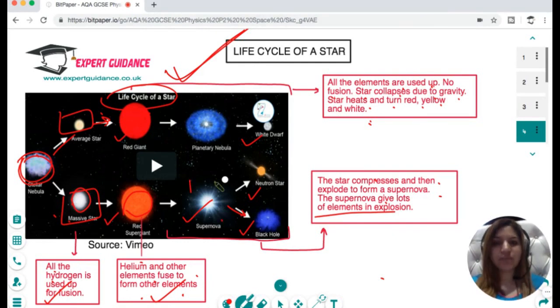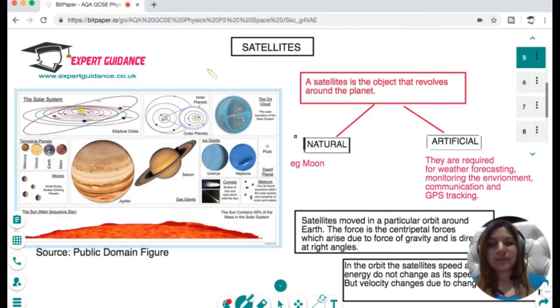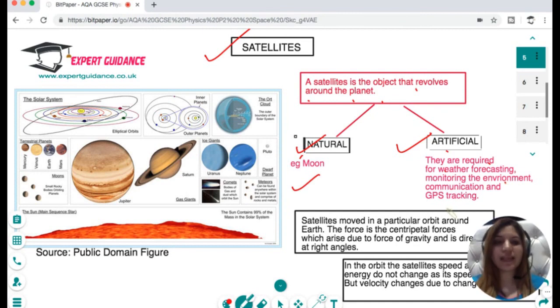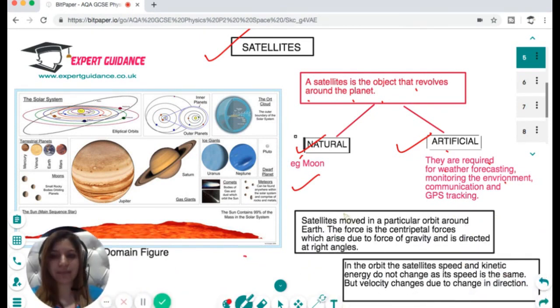Next is satellite. A satellite is an object that revolves around a planet and they can be natural or artificial. Natural is the moon. Artificial are the ones required for weather forecasting, monitoring the environment, communication, and GPS tracking.